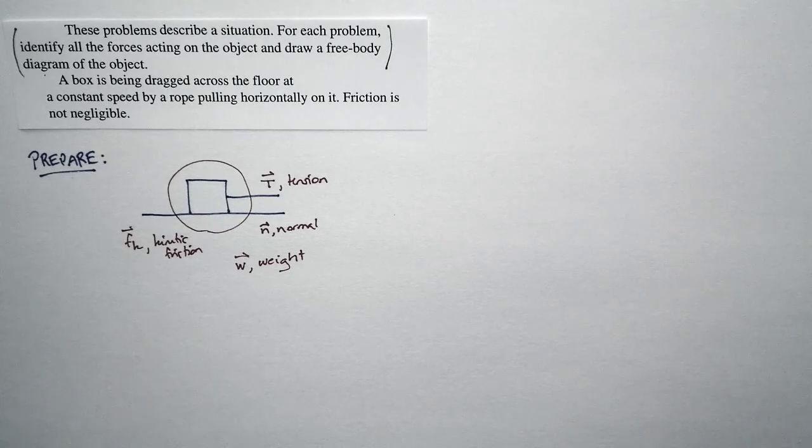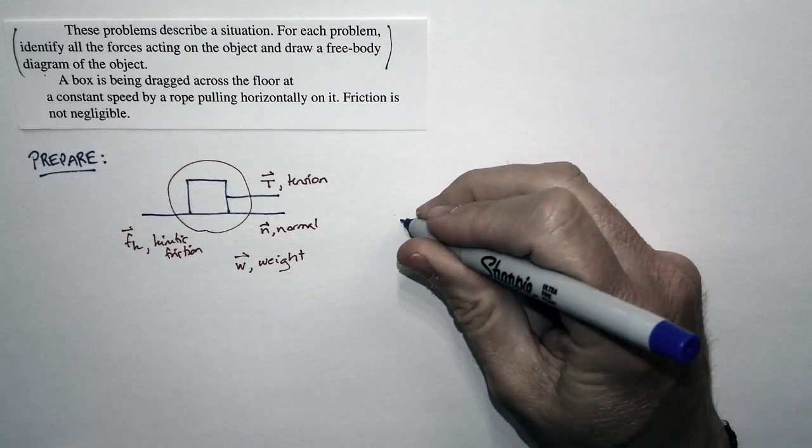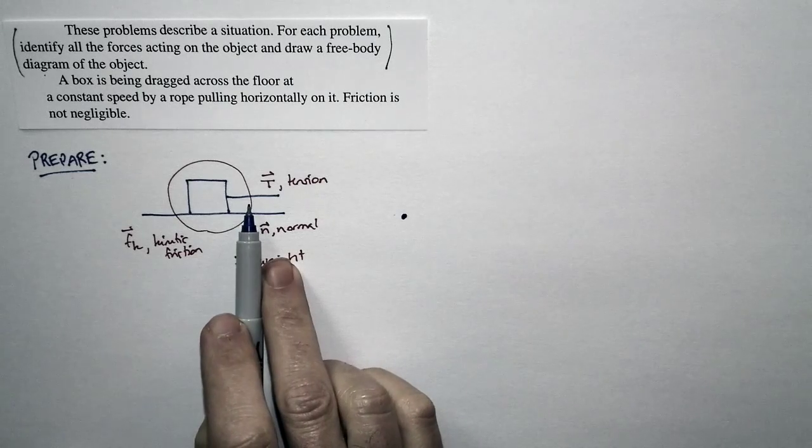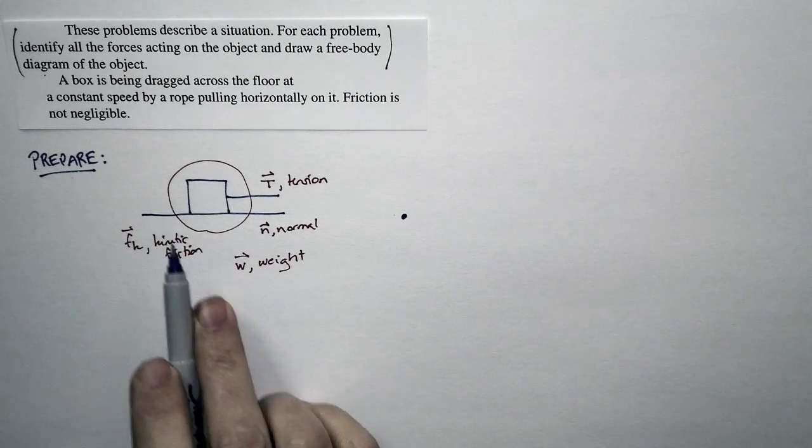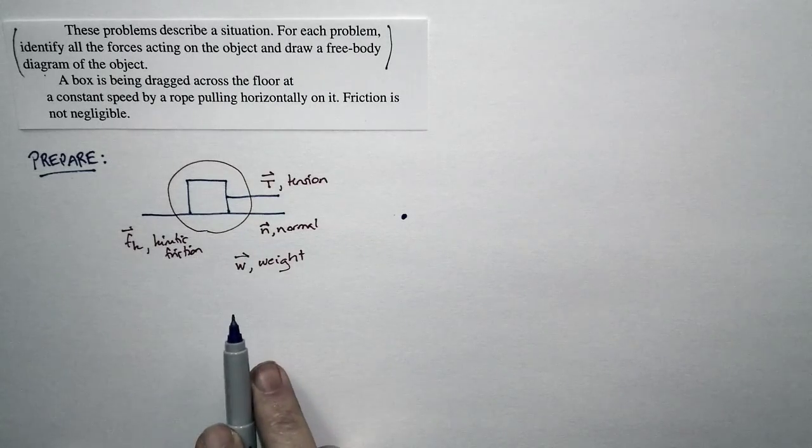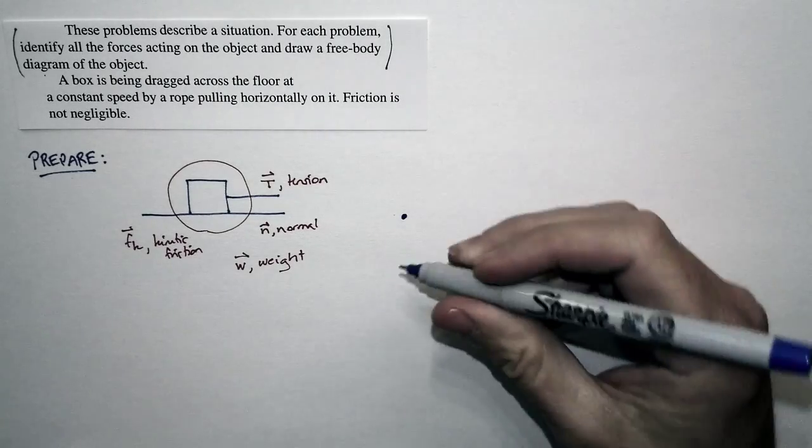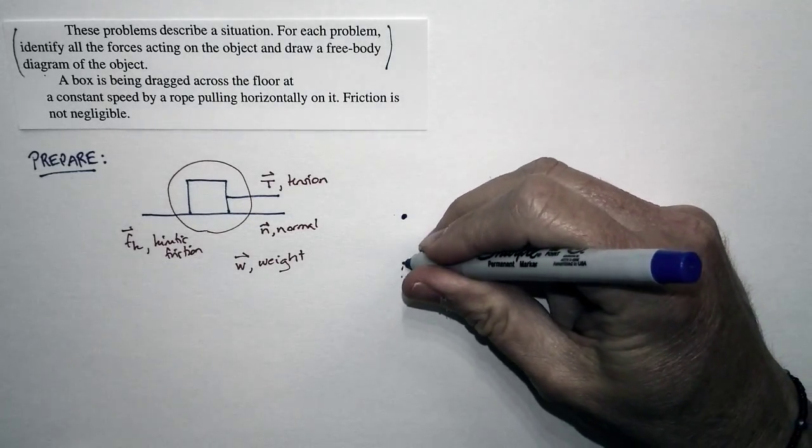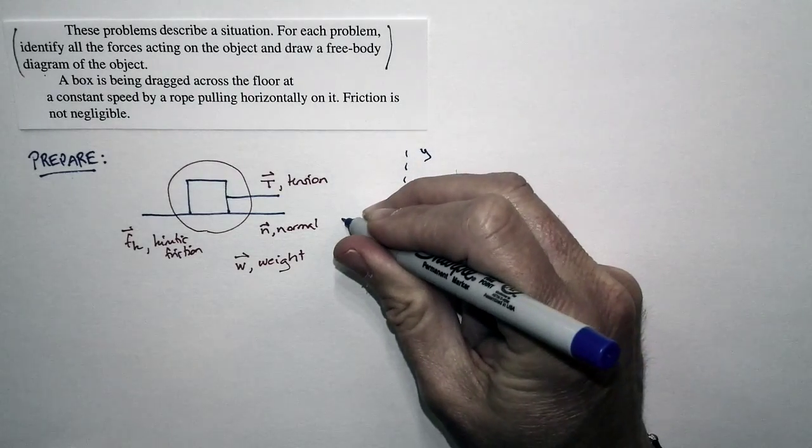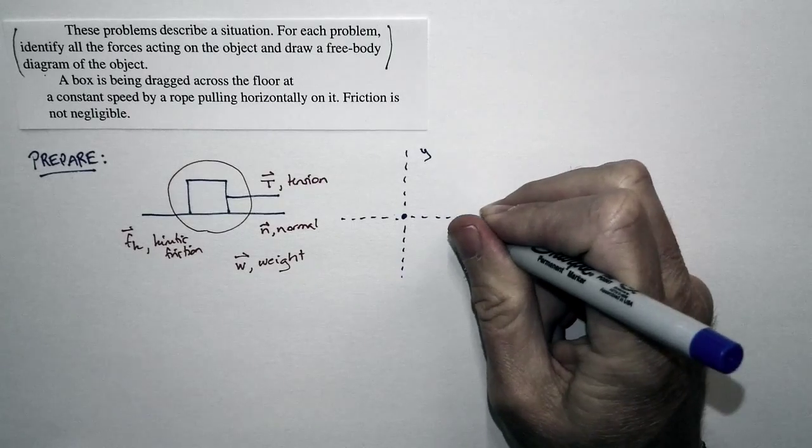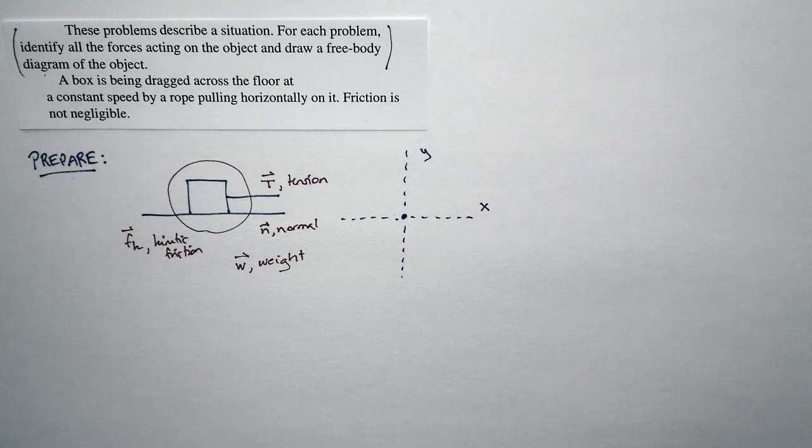Now we want to take these forces and put them on a free body diagram. The rope is pulling horizontally. The friction force is acting horizontally. The weight force is acting vertically. The normal force acts vertically. So really, all of our forces are either going to be on the y-axis or on the x-axis. So that's going to simplify the setup.